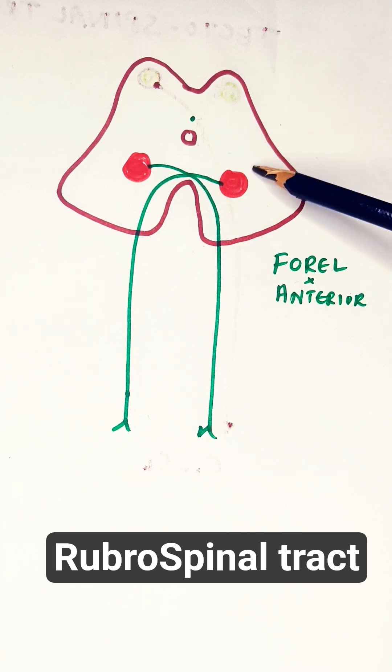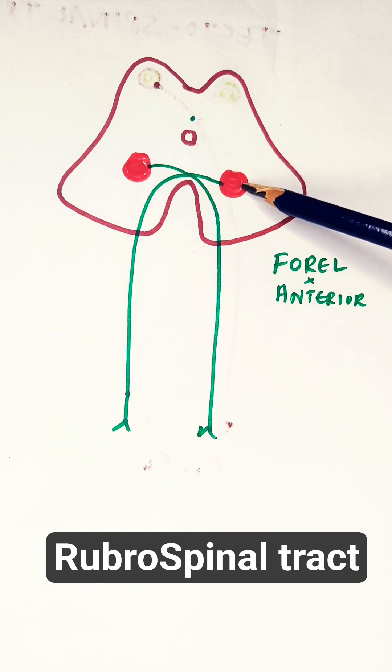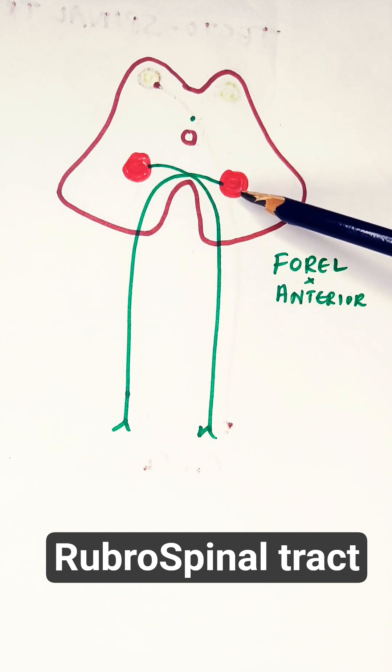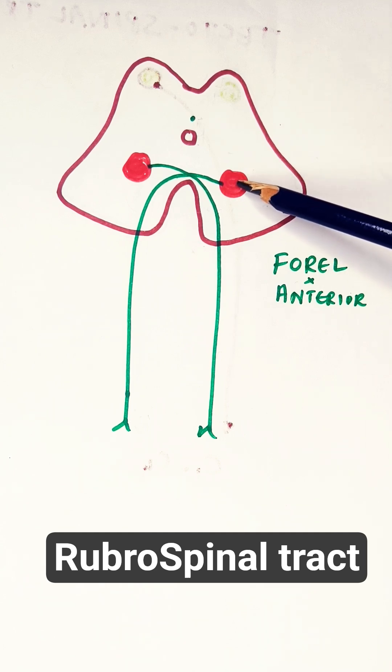The tract originates from the magnocellular part of the red nucleus. The red nucleus has both a magnocellular and a parvocellular part, and this tract arises from the magnocellular part.